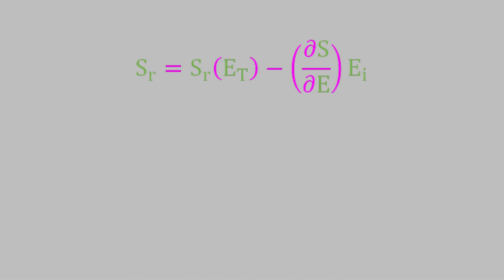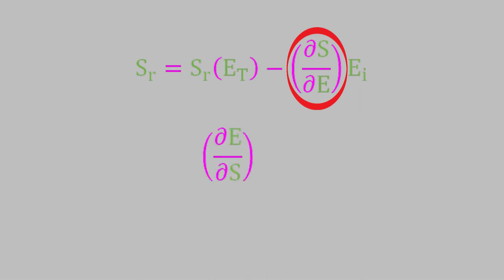Here is that correction term. It consists of E sub i, which is the energy of the microstate that the system is in, multiplied by this partial derivative, which tells us how much the entropy changes as we change the energy. This doesn't look like a very useful equation, but it's actually easier to use than it might seem. It turns out that the partial derivative in this equation is related to a property that you've seen many times before. The partial derivative of energy with respect to entropy is actually the definition of temperature. That means that the partial derivative in the equation is equal to 1 over the temperature. So we can rewrite it like this.